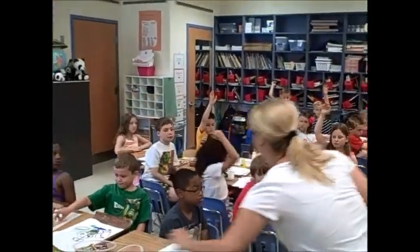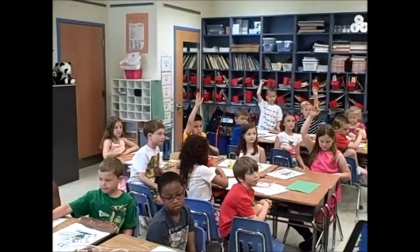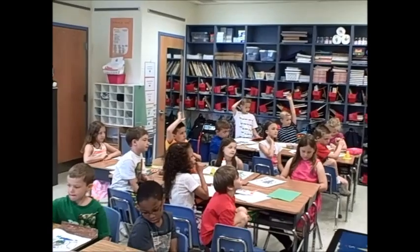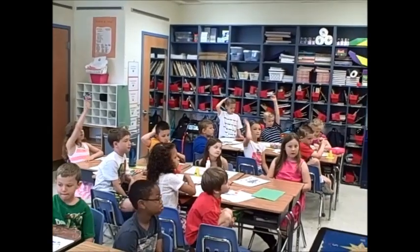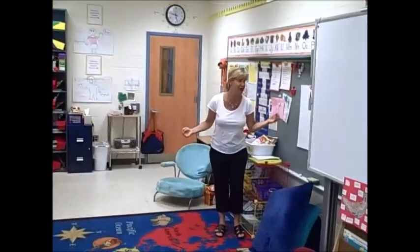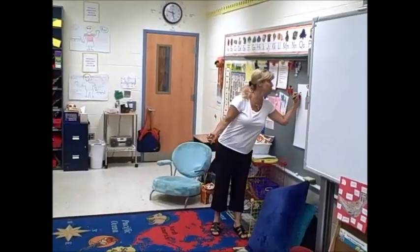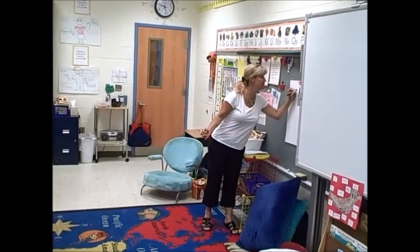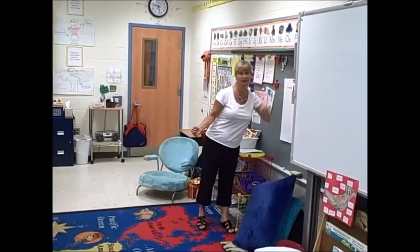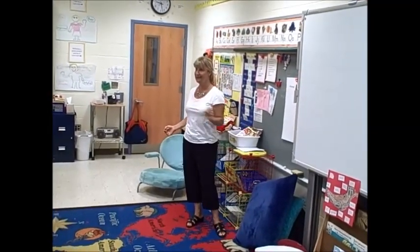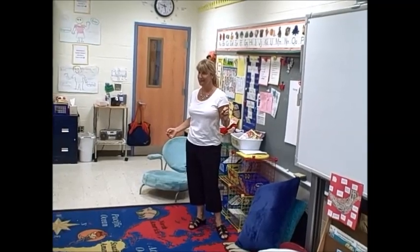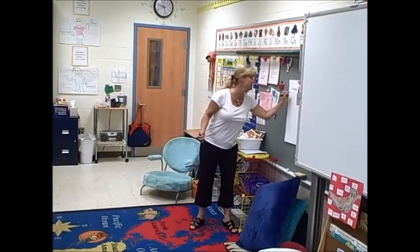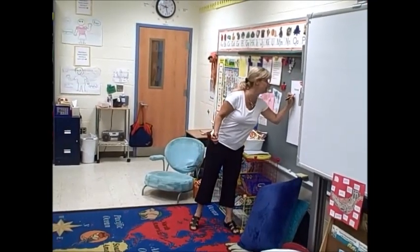Student: Their name. Teacher: Okay, the name of your plant — it's probably something that nobody's ever heard of, so you're going to want to describe the name of your plant if it has one. What else? Student: The colors. Teacher: The colors of your plant.